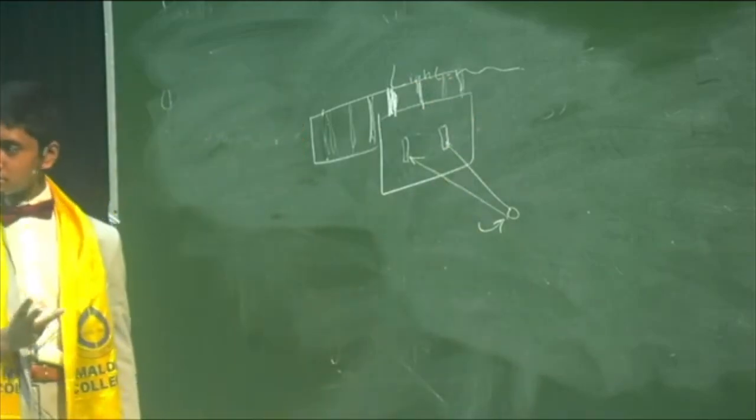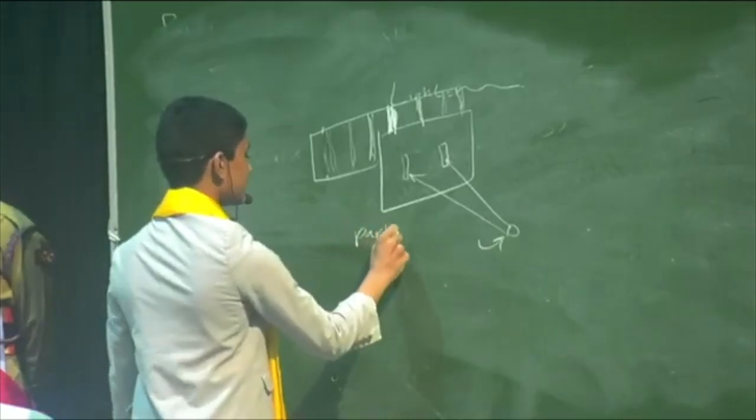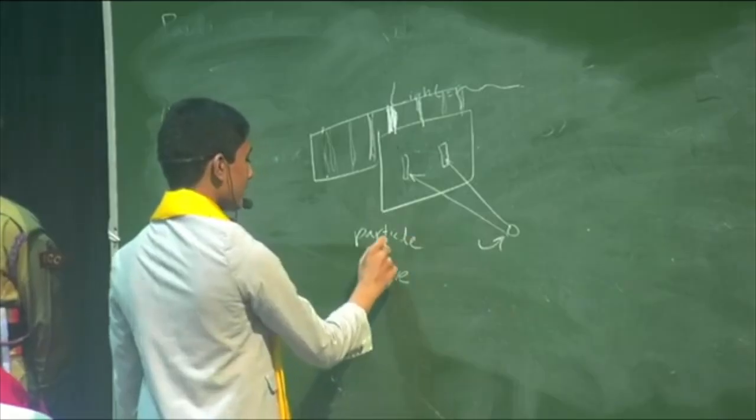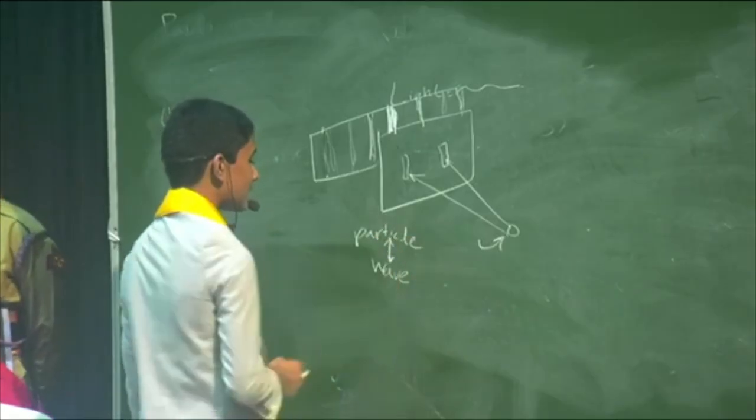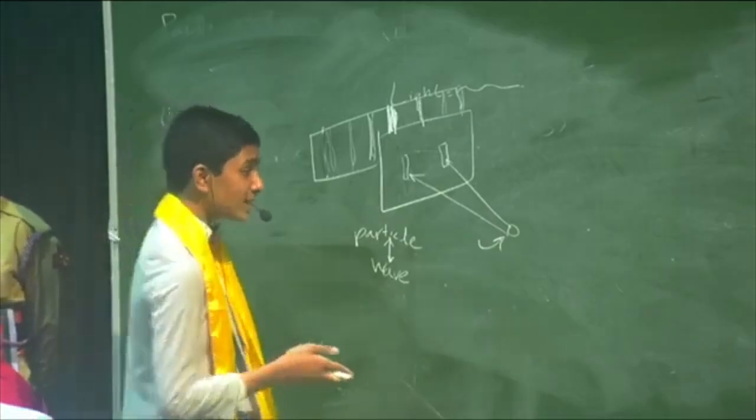And so the problem was that, even though light was supposed to be a particle, it was displaying qualities expected of a wave. And so people started questioning if it was either a wave or a particle, and eventually we decided...